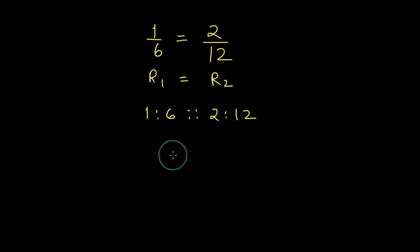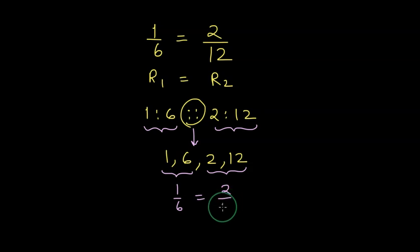This can also be read as 1, 6, 2, and 12 are in proportion. Note this sign here—the four dots placed in this manner show that the ratio on the left and the ratio on the right are equal. You can also write the four numbers using commas, and the order is very important. The numbers on the left show the numerator and denominator of the first ratio, and the numbers on the right show the numerator and denominator of the other ratio. Problems are often asked where we're given four numbers and asked whether they are in proportion.